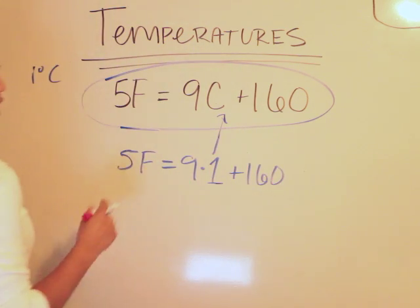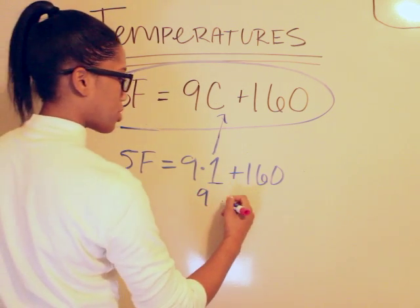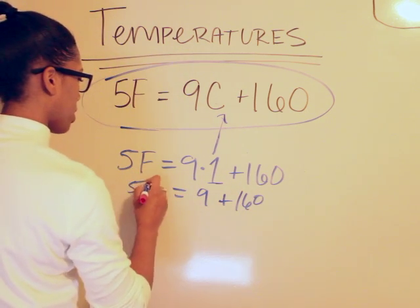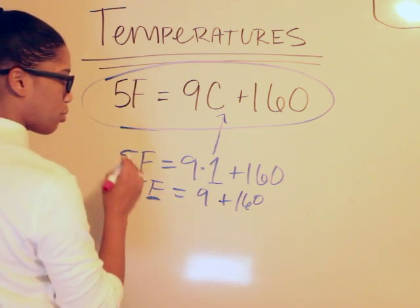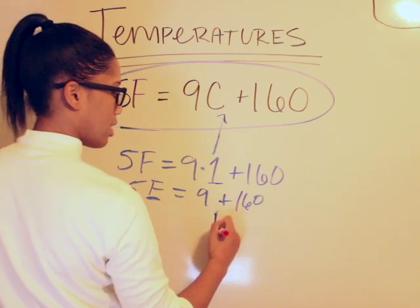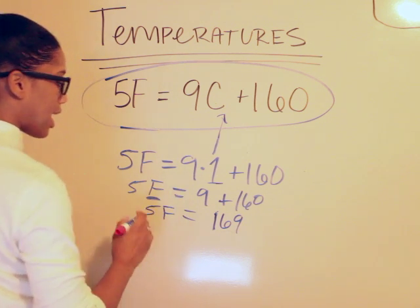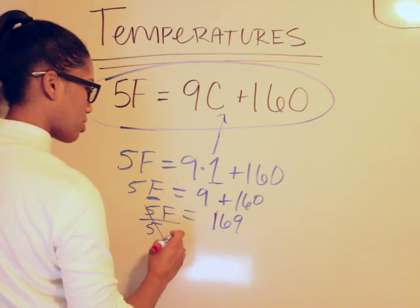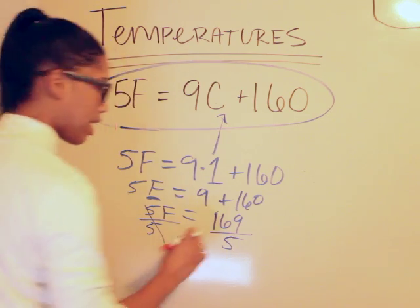Okay, so this one's pretty straightforward. You would do 9 times 1 here, you multiply first, plus 160, and you can bring your 5F down and we're solving for F. Remember that we're solving for the F. So on this side it leaves us with 169 which equals 5F. Then to isolate the variable we want to divide by 5, divided by 5 on this side, and we're going to get what F is.